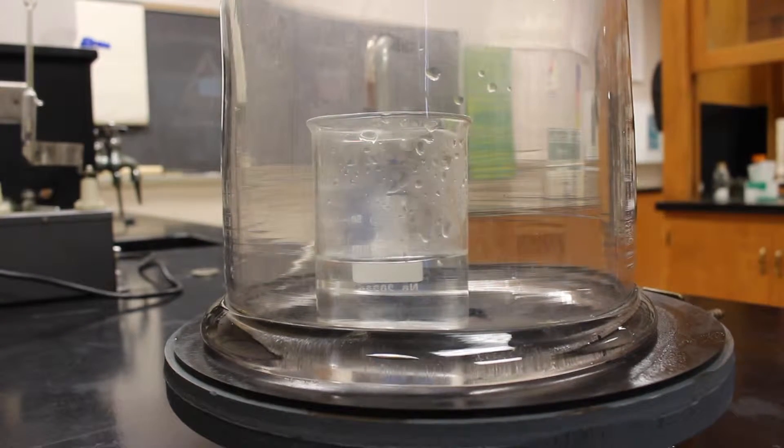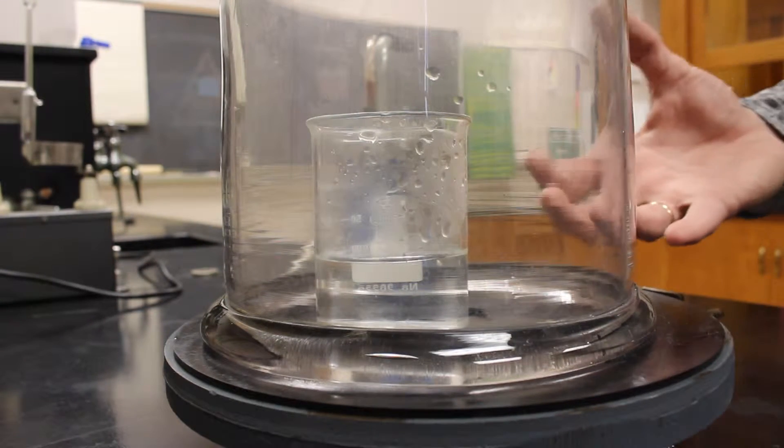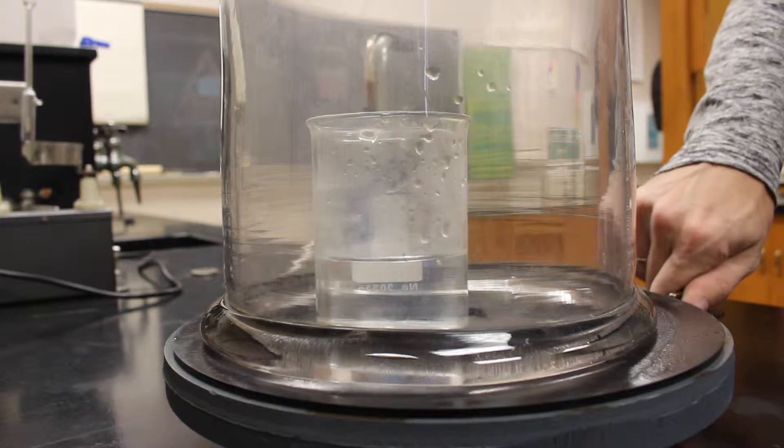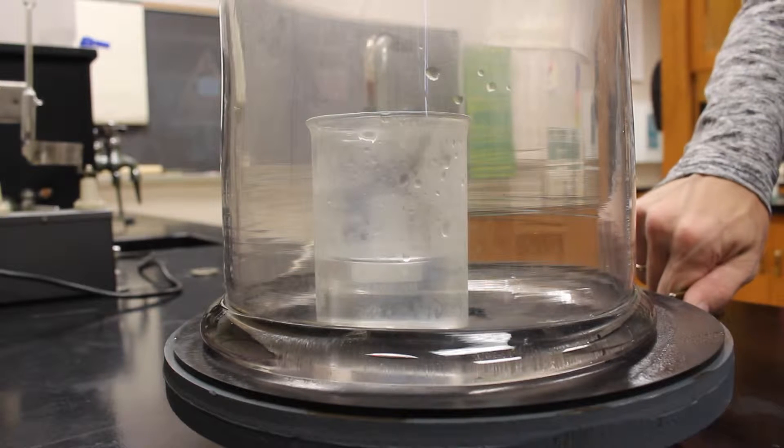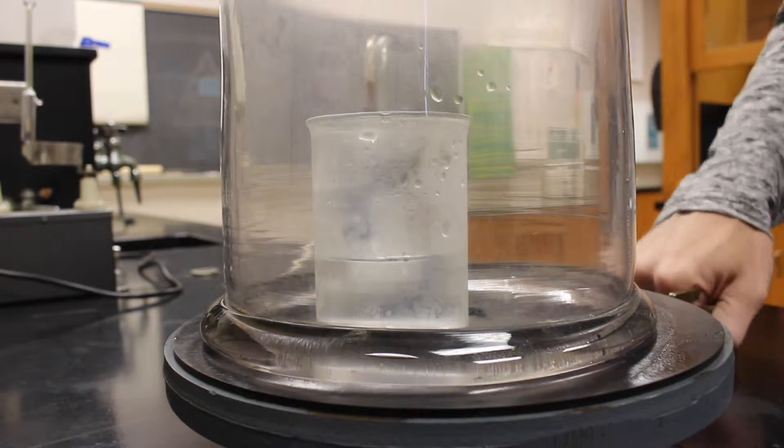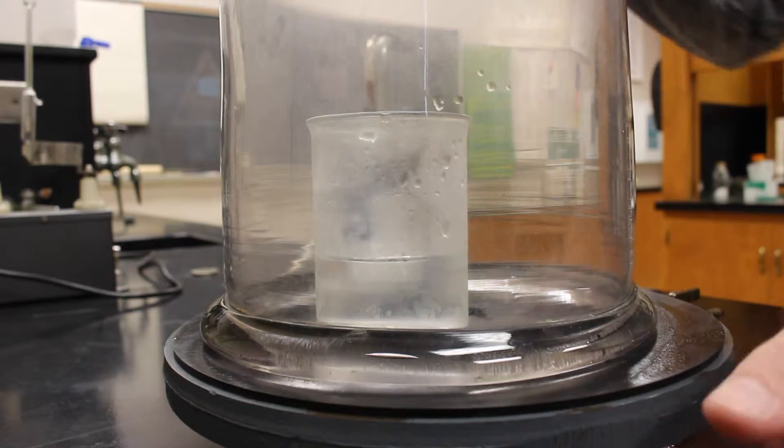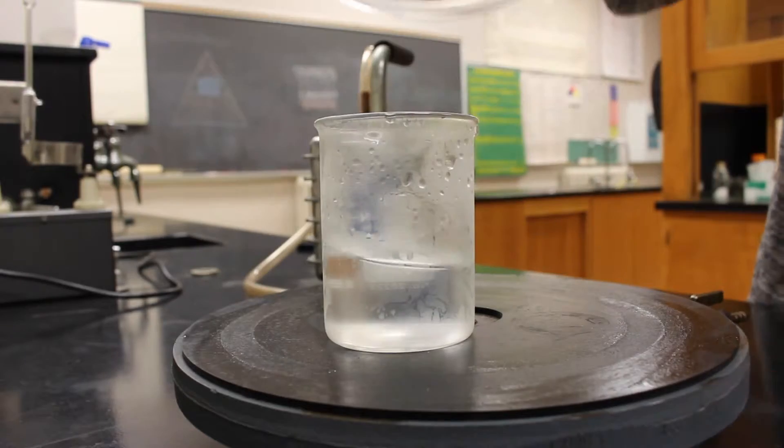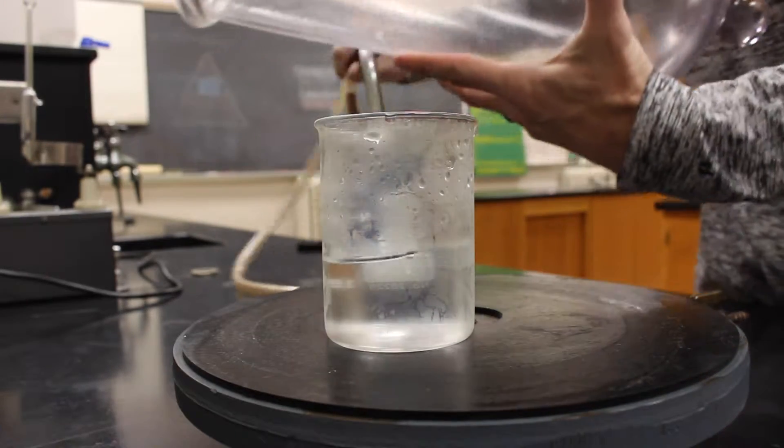Okay, so I'm going to let the pressure back into the bell jar now, and it might cloud up just a little bit. Let's see. Well, we definitely got some good condensation on the beaker. Let me see if I can open this. There we go. Alright, and we'll just set this down here.